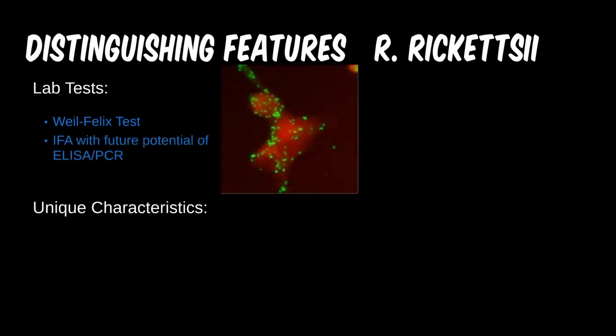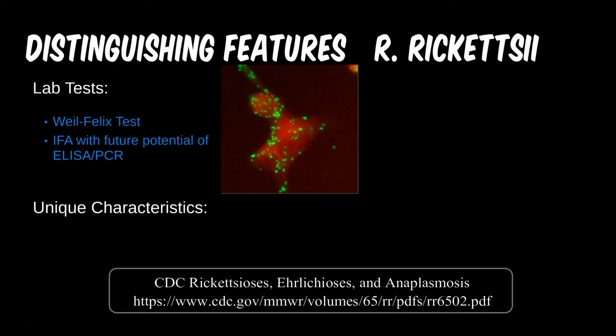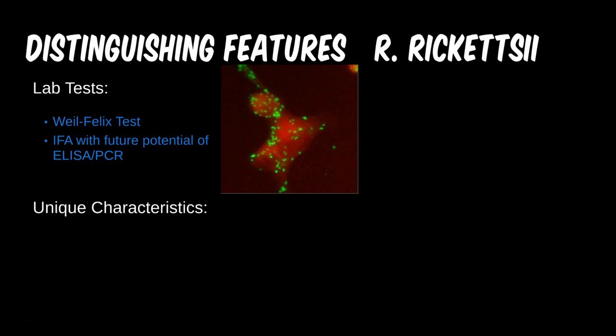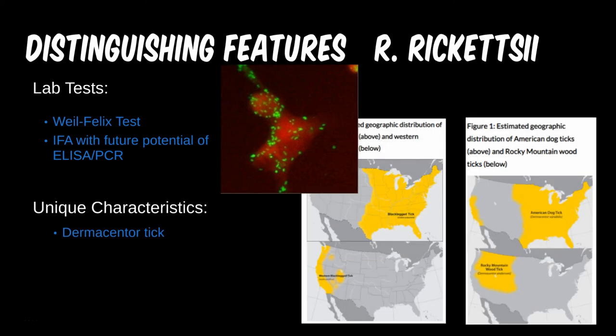Despite the Weil-Felix test being good exam fodder, the CDC recommends immunofluorescence as the standard for diagnosis of Rickettsia. PCR and ELISA may be alternatives but are not currently first-line. Testing for rickettsial illness is often used to distinguish between other rare diseases with vague symptoms, such as Q fever. Due to the rareness of these infections, there is less statistical evidence for some of the diagnostic testing, but CDC recommendations generally suffice for exams.